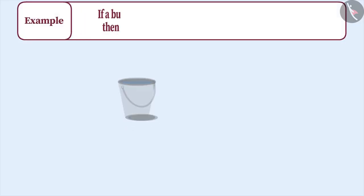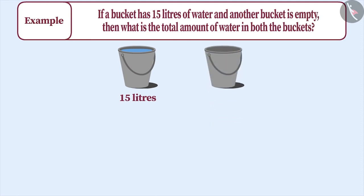If a bucket has 15 litres of water and another bucket is empty, then what is the total amount of water in both the buckets? In the given example, the first bucket has 15 litres of water. The second bucket is empty, which means that it has 0 litres of water in it. To find the total amount of water in both buckets, we have to add both values.